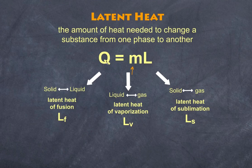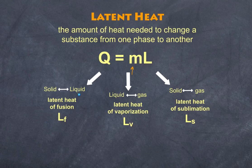These L values — latent heat of fusion, latent heat of vaporization, and latent heat of sublimation — tell us how much energy needs to be input to go from a solid to a liquid, and likewise how much energy will be released when converting the liquid back into a solid.